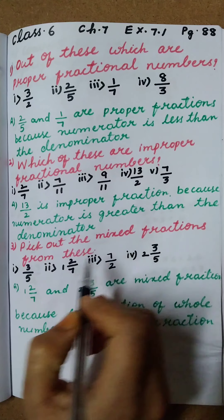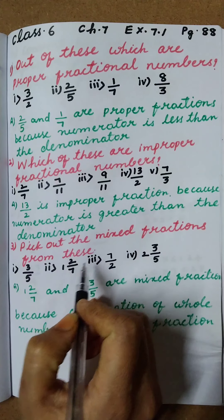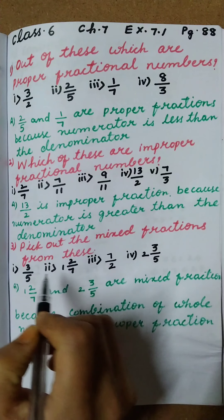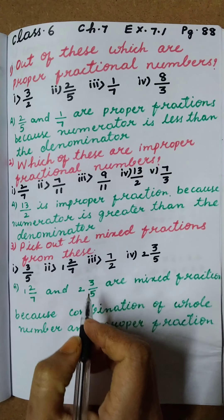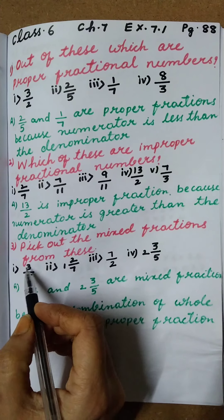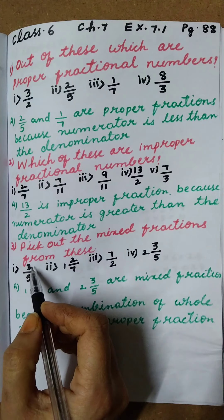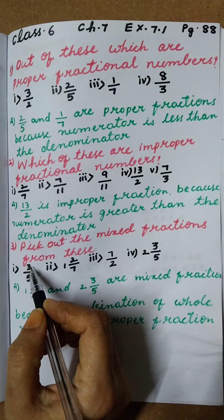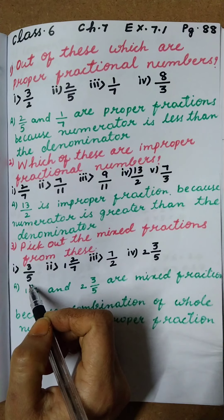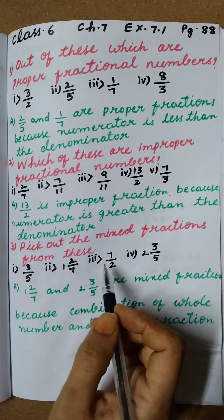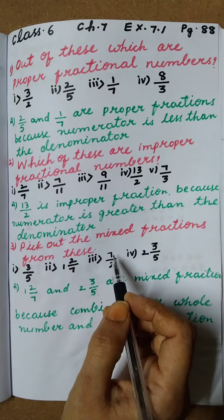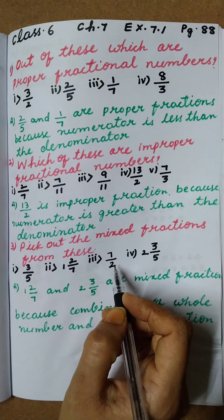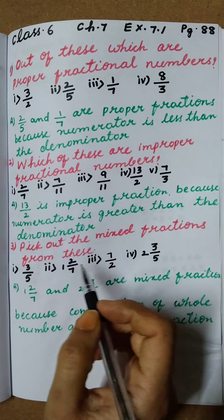Pick out the mixed fractions from this. Here 4 are given. In this, we have to identify which are the mixed fractions. The 3 by 5 — here numerator is less than the denominator, so it is a proper fraction. Here 7 by 2 — numerator is greater than the denominator, so this is the improper fraction.